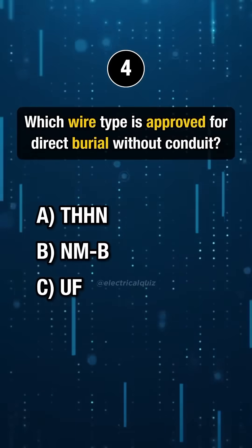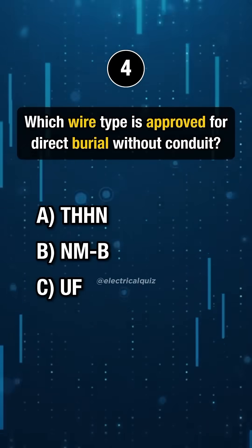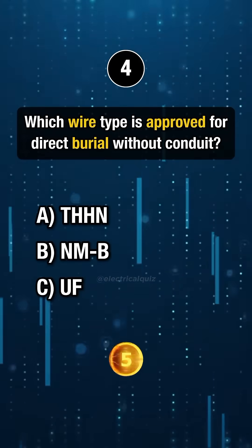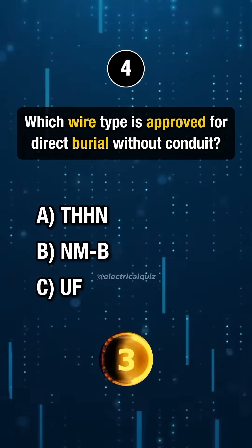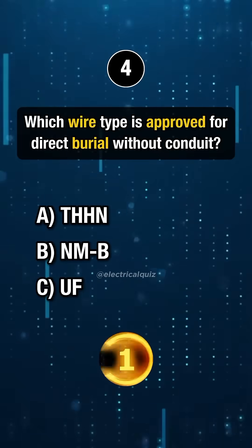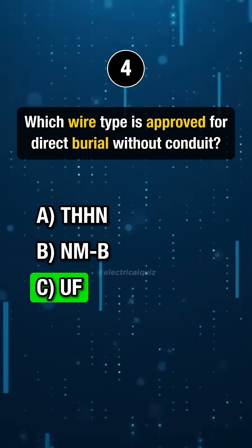Question 4. Which wire type is approved for direct burial without conduit? Answer C: UF.